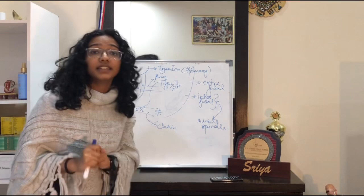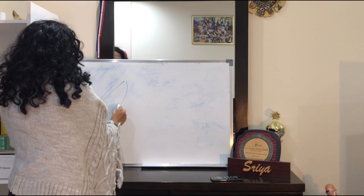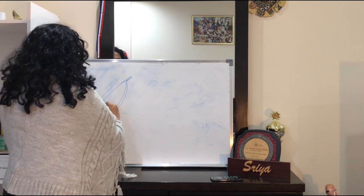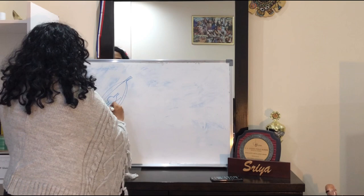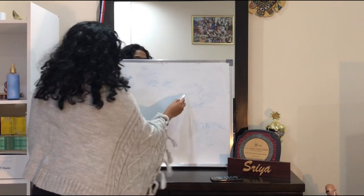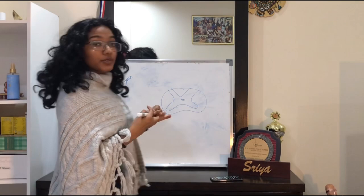Let's study the stretch reflex. Here is an extrafusal muscle fiber with its tendons, and here are a nuclear bag intrafusal fiber and a nuclear chain intrafusal fiber within the extrafusal fibers. This is the cross-section of the spinal cord. Now suppose I tap on your quadriceps tendon.